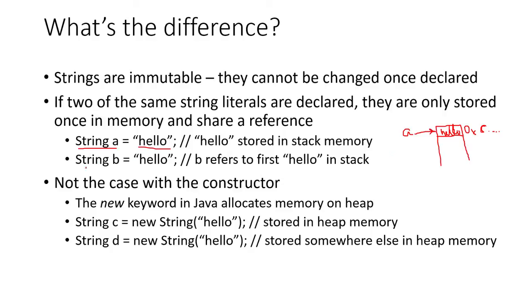A is going to refer to that place in memory. But once we declare this variable B, and it's also equal to 'hello,' B is going to point to the same spot in memory, or in the RAM.